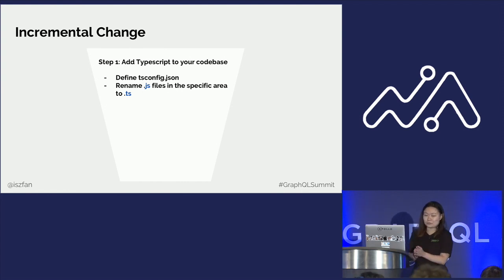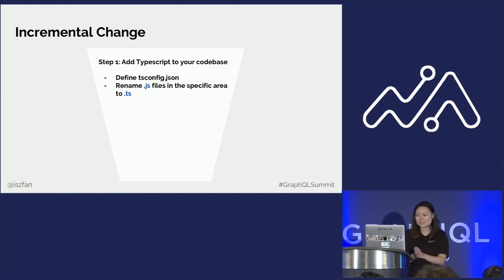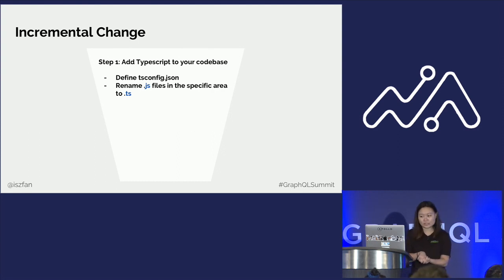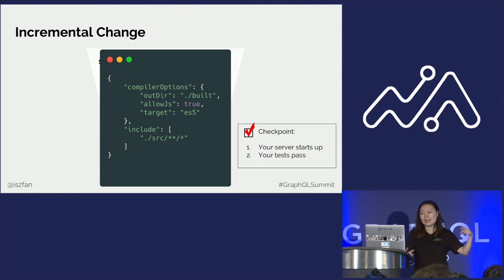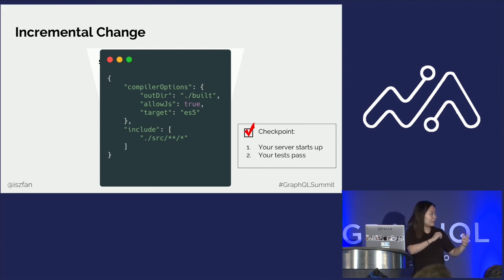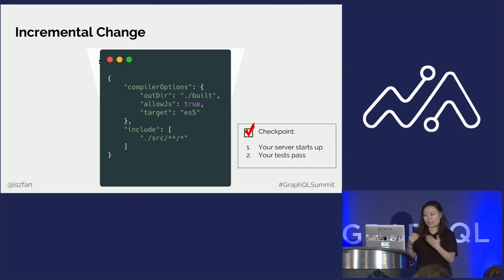Once your goal is set, let's look at how to incrementally change that small folder into TypeScript. The first step is straightforward: add TypeScript to your code base. TypeScript's official website provides great tutorials, but essentially you want to define a config file called tsconfig.json, then rename the .js files in a specific area to .ts. The tsconfig file outputs compiled TypeScript code into a build folder, and allowJs is set to true — this allows the coexistence of TypeScript and JavaScript files. At the end of this step, do a checkpoint to make sure your server still starts up, nothing is broken, and your tests still pass.